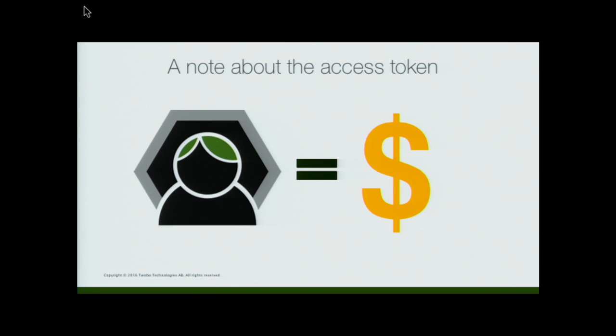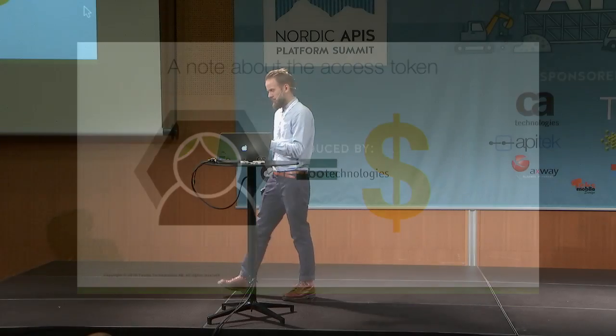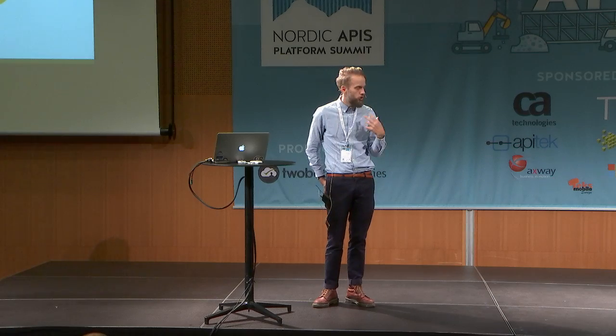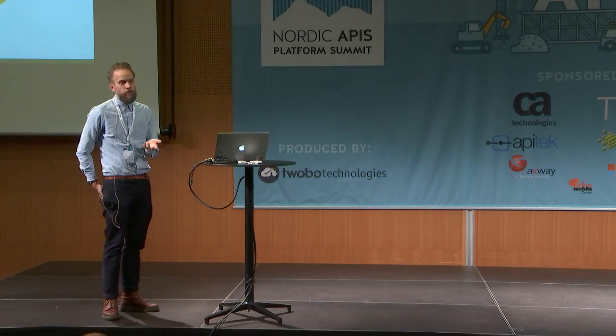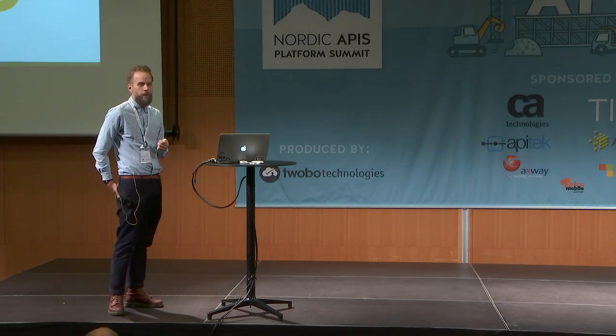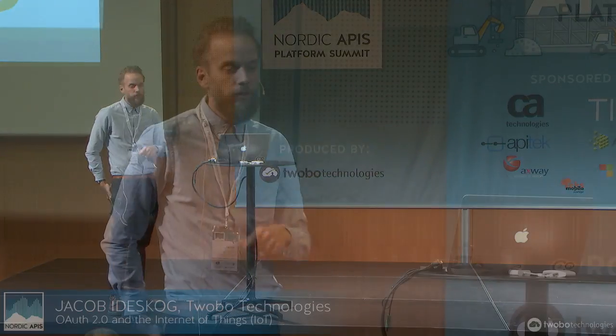The access token — let's talk about that a bit. This is critical in OAuth 2, and it's good to understand what this is. The access token is a piece of data. It's a string that we send around. But it is a particular type of token called a bearer token, which means it's like cash. If you find a $100 bill on the ground, you can pick it up, go to the store, and buy yourself a t-shirt. You don't have to prove that you are entitled to use that bill. You can just use it. And that's exactly what an access token in OAuth is.